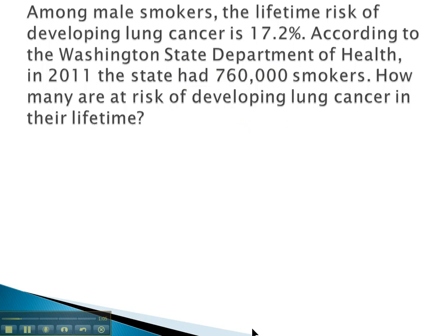For example, if we knew that among male smokers the lifetime risk of developing lung cancer was 17.2%, and the Washington State Board of Health said in 2011 the state had 760,000 smokers — how many would we expect to get lung cancer in their lifetime? The big thing we need to look at is that 760,000 and decide: does that represent all of them, or just the part we're interested in? 760,000 represents all of the smokers, so it is the 'of' in our proportion.